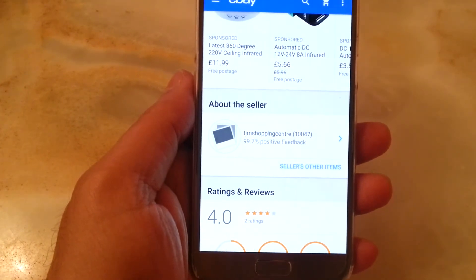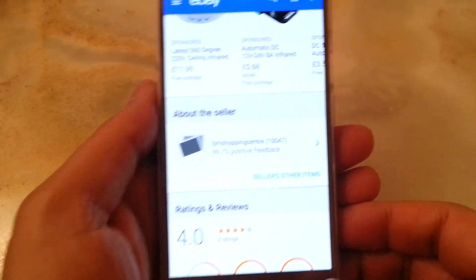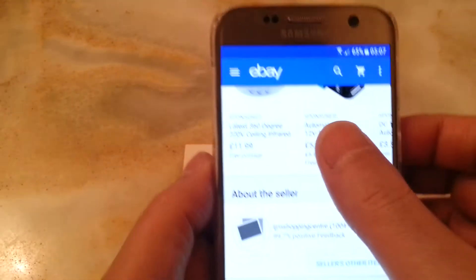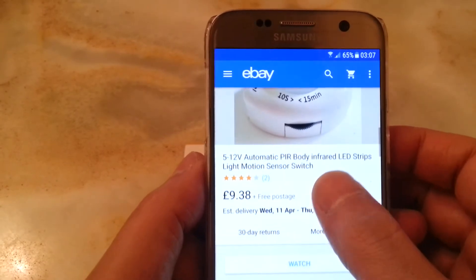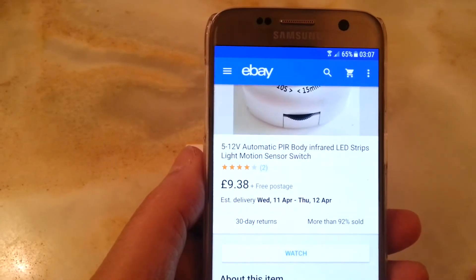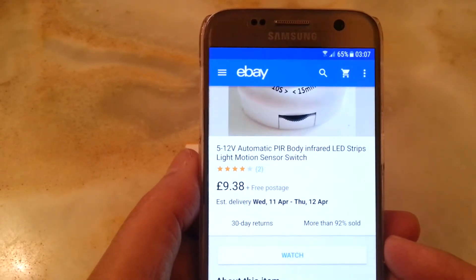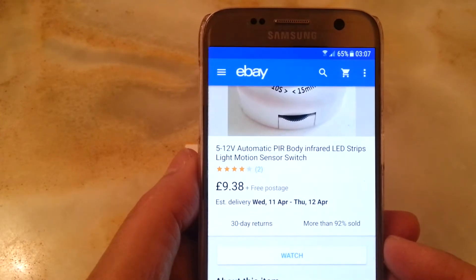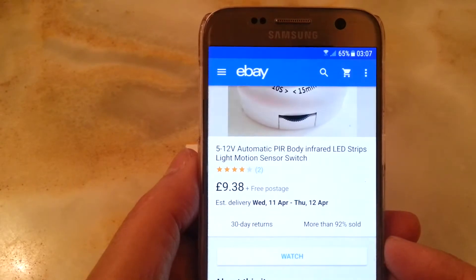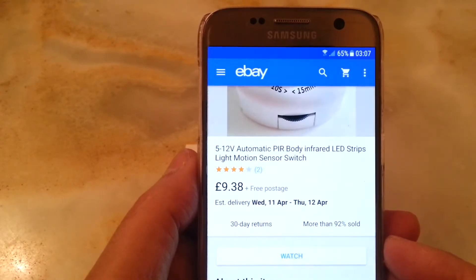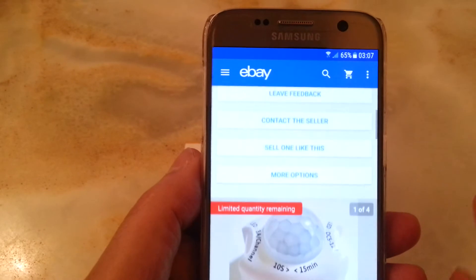And the name of this item is 5 to 12 volt automatic PIR body infrared LED strips light motion sensor switch. That's a very long name isn't it.